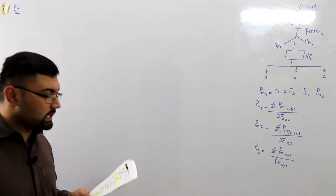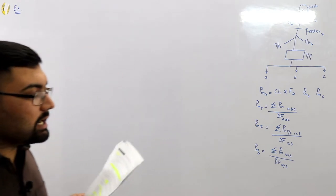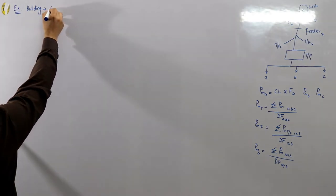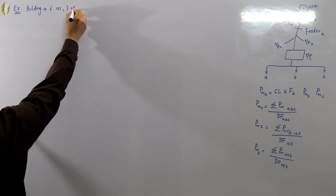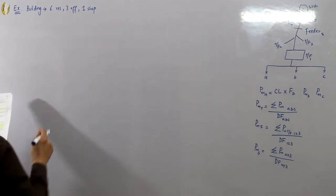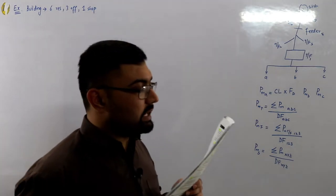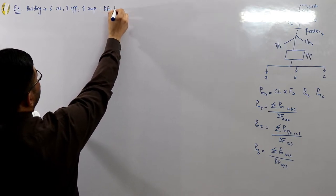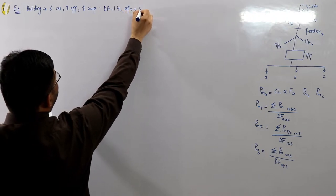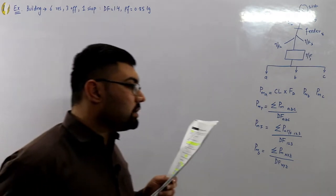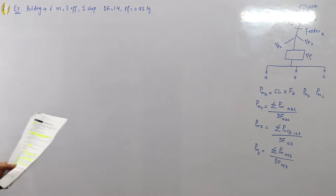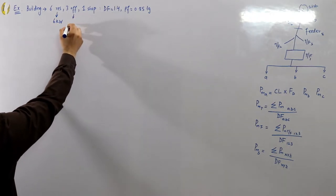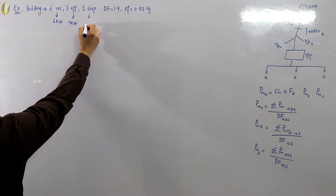The first example: a metropolitan building with six residential apartments, three offices, and one shop. This building has an overall diversity factor of 1.4 and a power factor of 0.85 lagging. The connected load of each entity is given — each residential apartment has a load of six kilowatts, each office has four kilowatts, and the shop has 3.5 kilowatts.